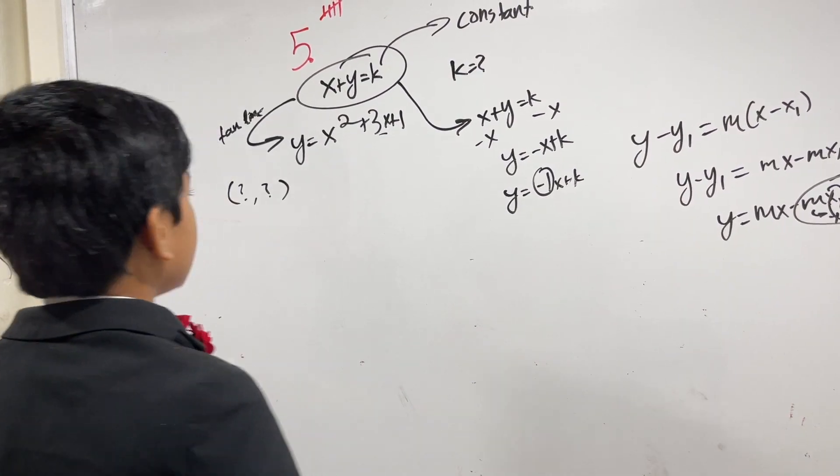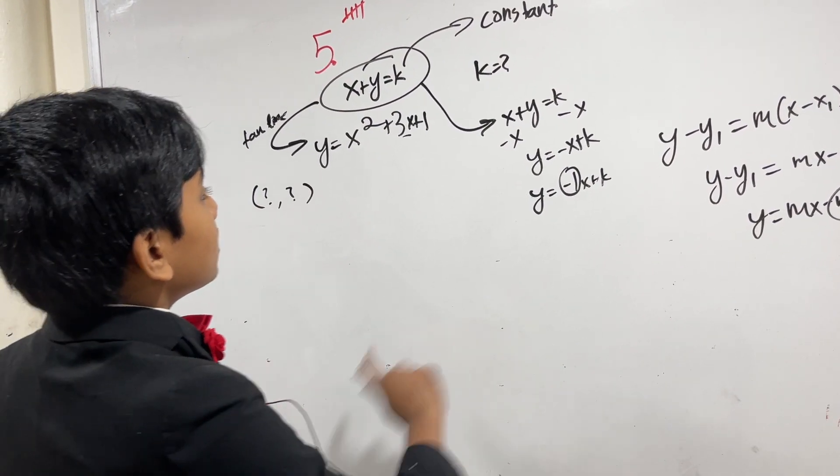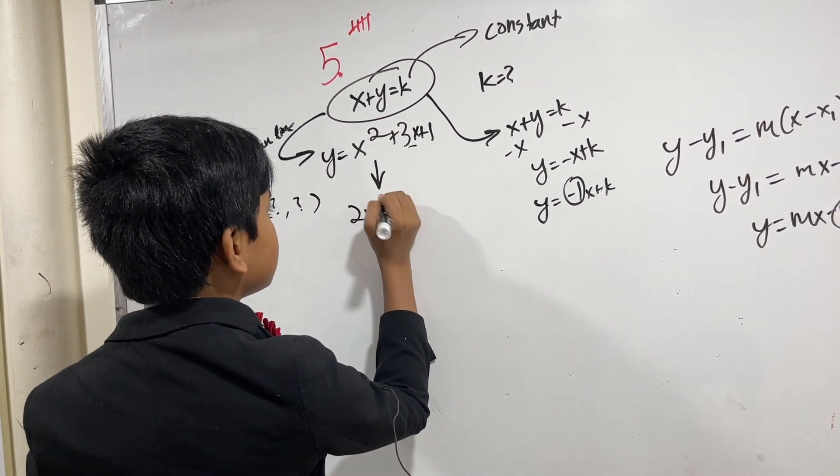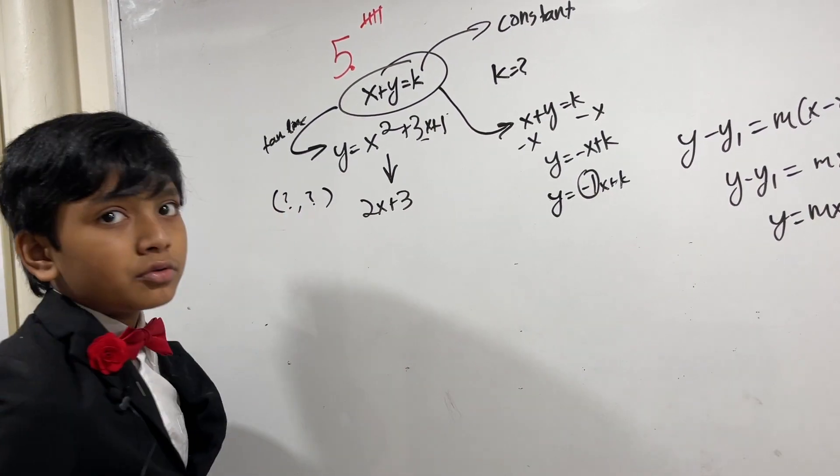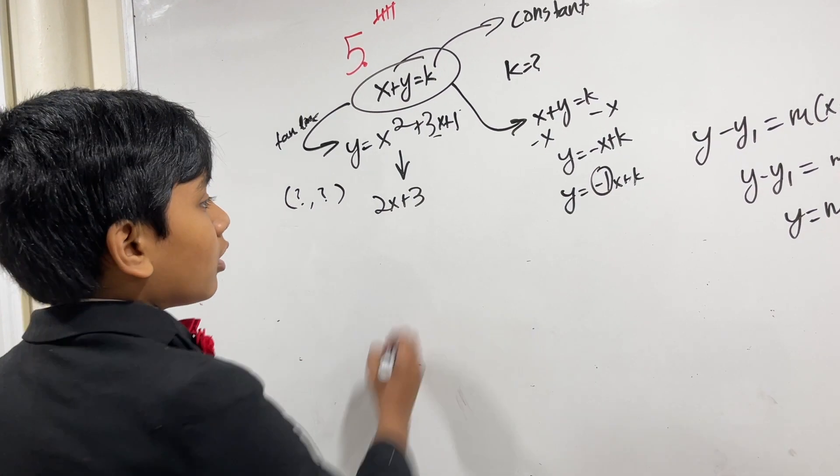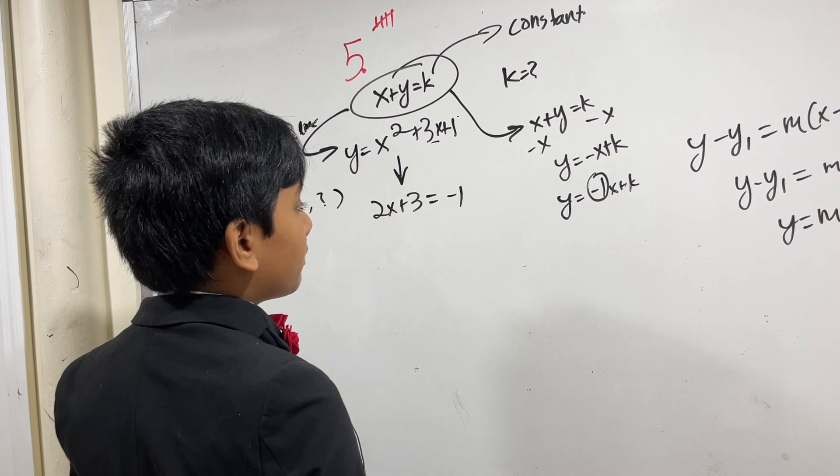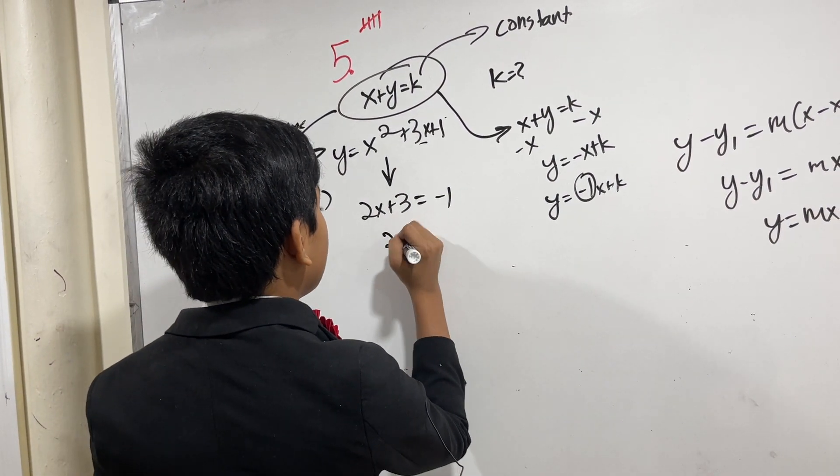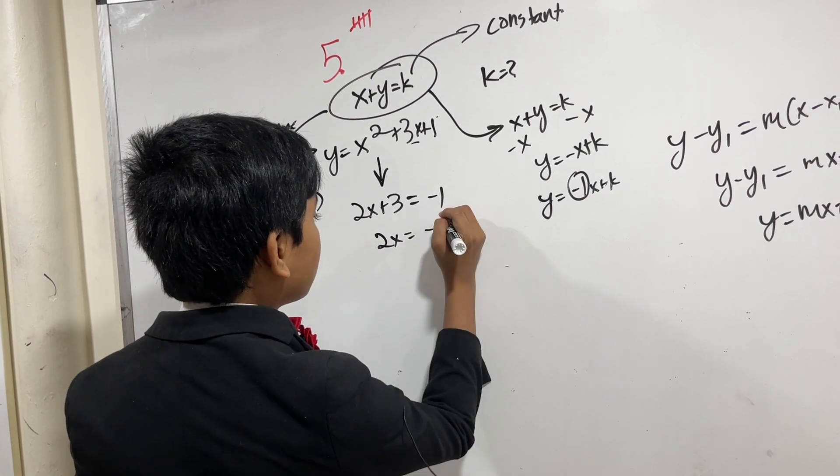So now, let's try this. Taking the derivative of this, we get 2x plus 3, because the derivative of 1 is 0. So now we want 2x plus 3 to be equal to minus 1 and find out the x-coordinate. So that gives us x equals minus 2.